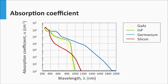Germanium, indicated by the blue line, is like silicon — it is an indirect band gap material. It has a band gap of 0.67 eV, which means it already starts to absorb light at wavelengths below 850 nm. In the visible part, germanium has some direct transitions as well.